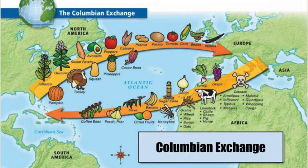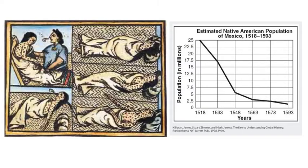The Columbian Exchange is this inadvertent introduction and exchange of living things — plants, animals, diseases, pathogens — that take place and shape the world. One impact is visible in Mexico's population: when the Spaniards arrived in 1518, there were about 20 million native people. By 1533 it was 17.5 million, by 1548 less than 5 million, and by 1593 only about 1 million people of indigenous descent — because of smallpox and disease. Almost everyone who got it died from it.